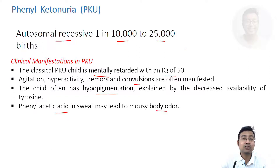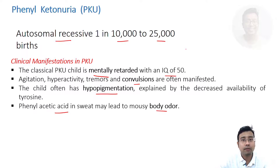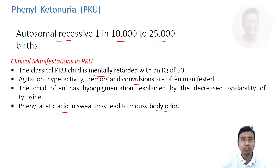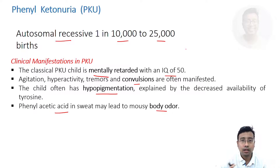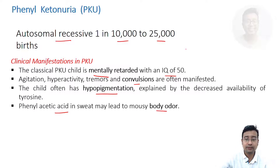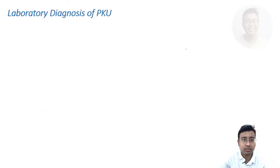Thyroid hormone is extremely important in early brain development. That is why cretin babies also feature mental retardation. Since thyroid hormone synthesis is also defective in phenylketonuria, the child suffers from mental retardation. Please remember these clinical manifestations as well as their explanations.